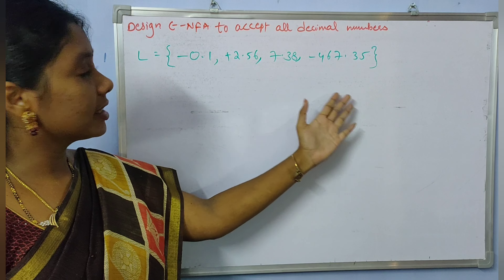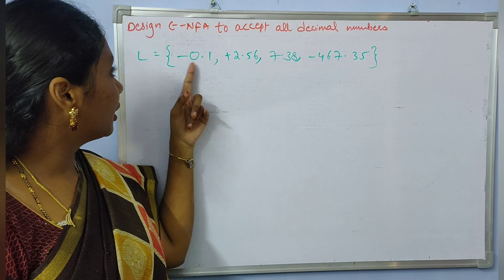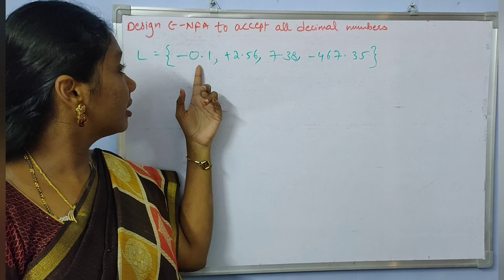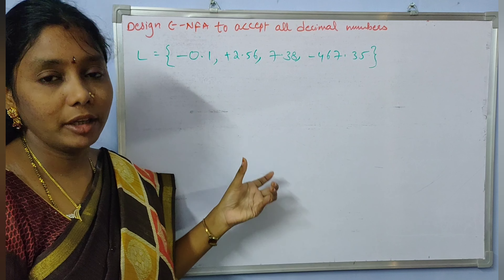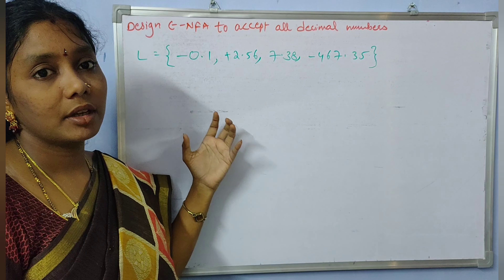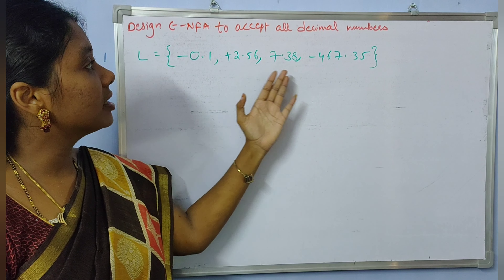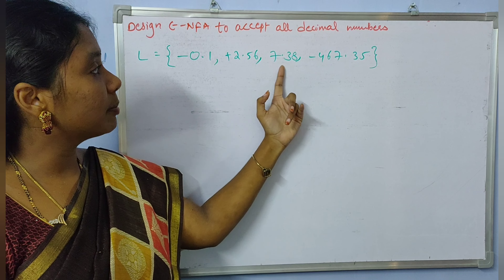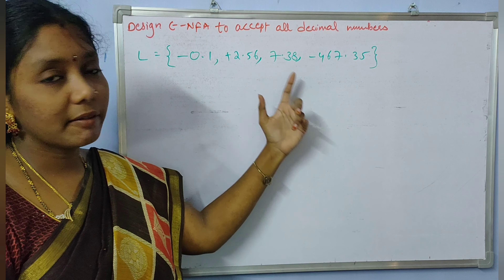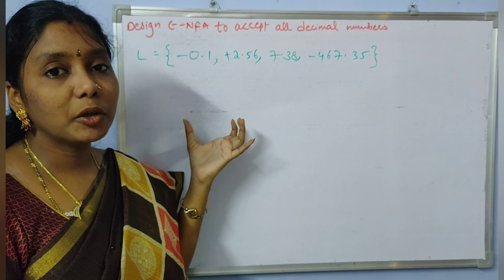These are the decimal numbers we are considering. A decimal number consists of a dot — referred to as a decimal point — and before and after that dot we may have some digits. Some decimal numbers may have a sign, and some may not have any sign; they can be directly written as 7.38, like that.